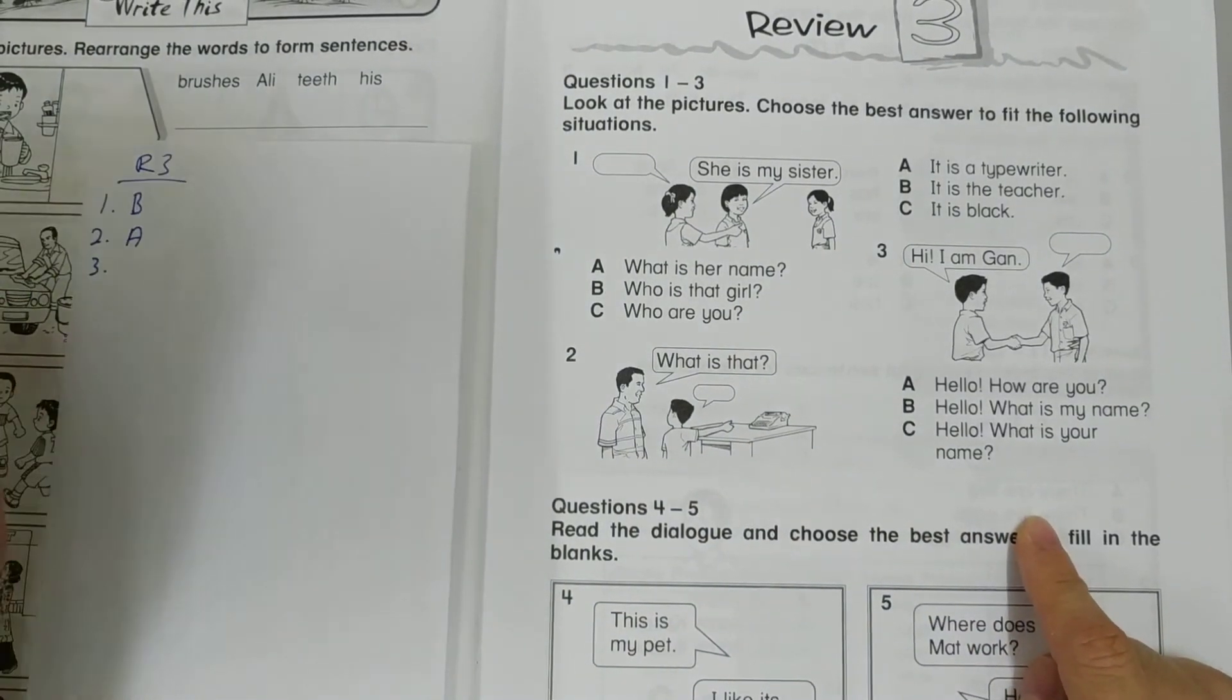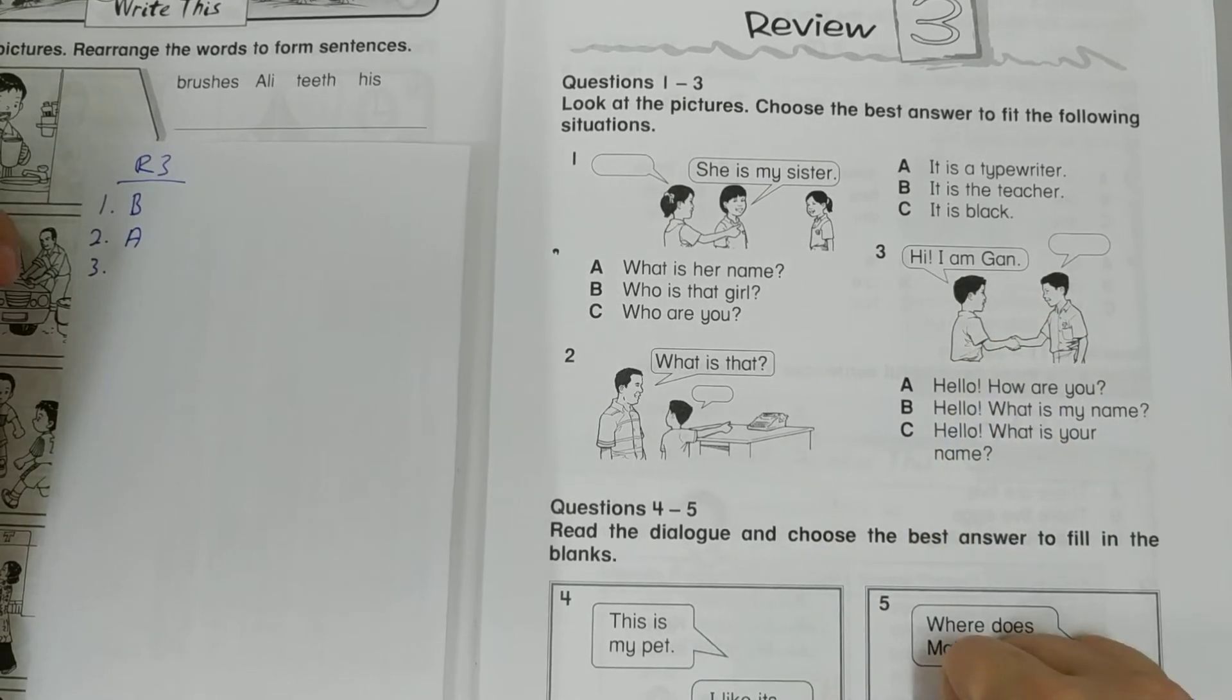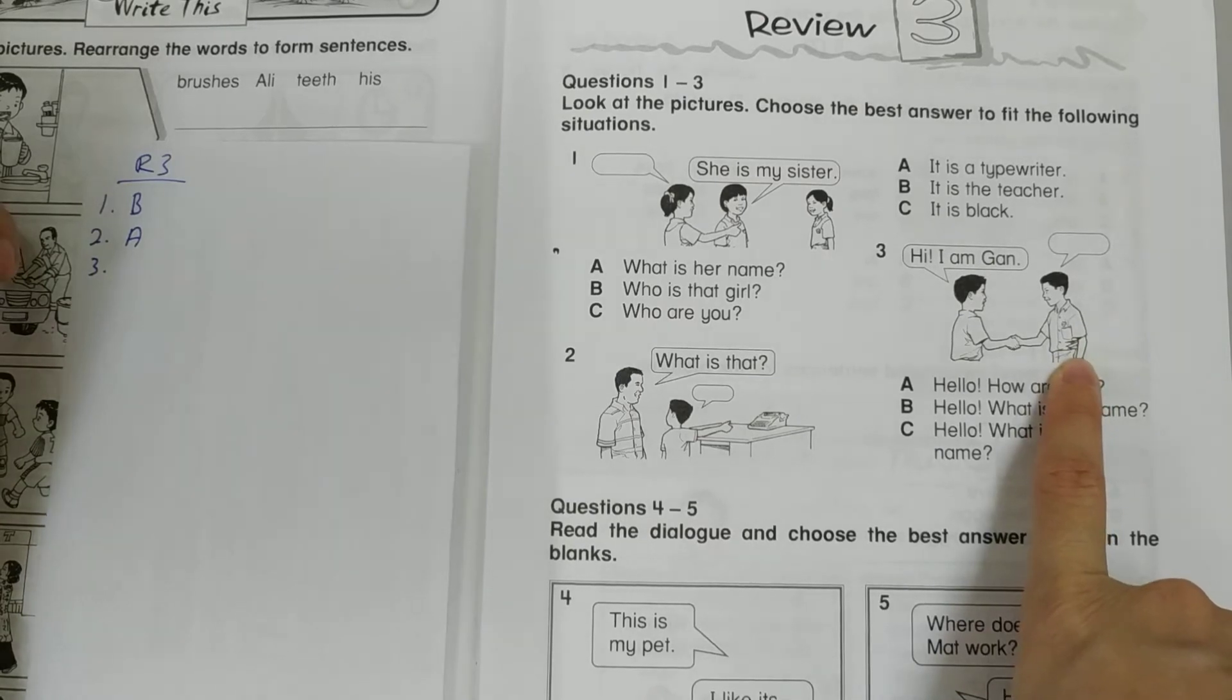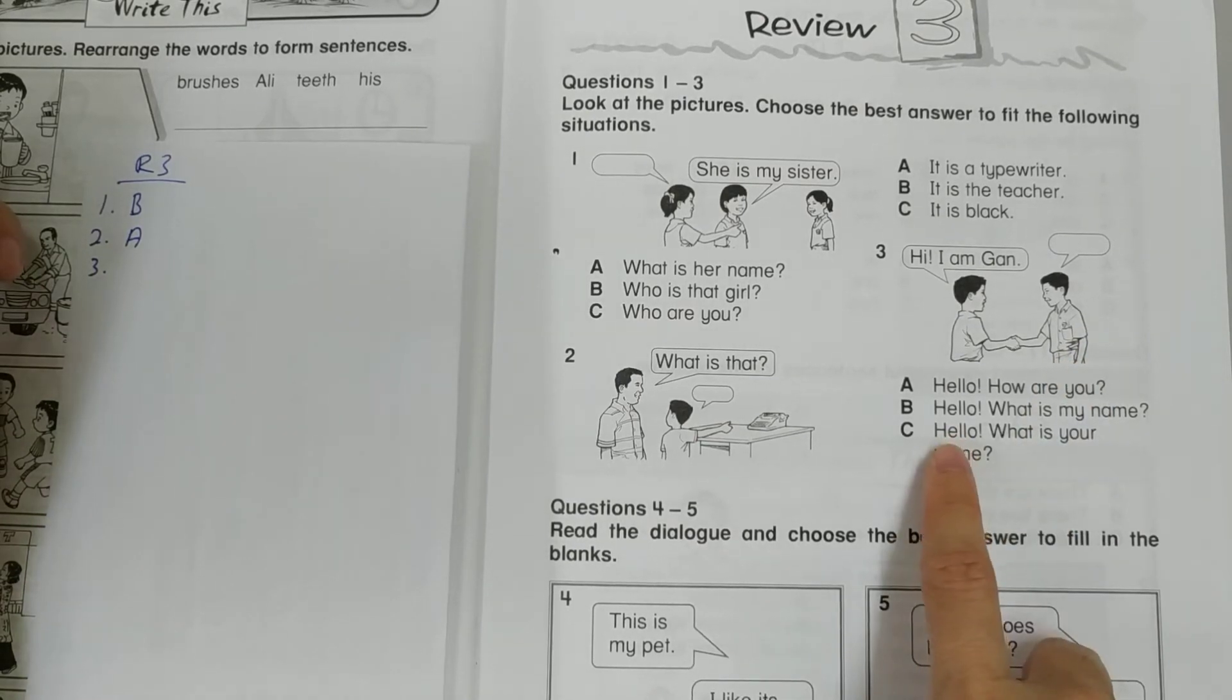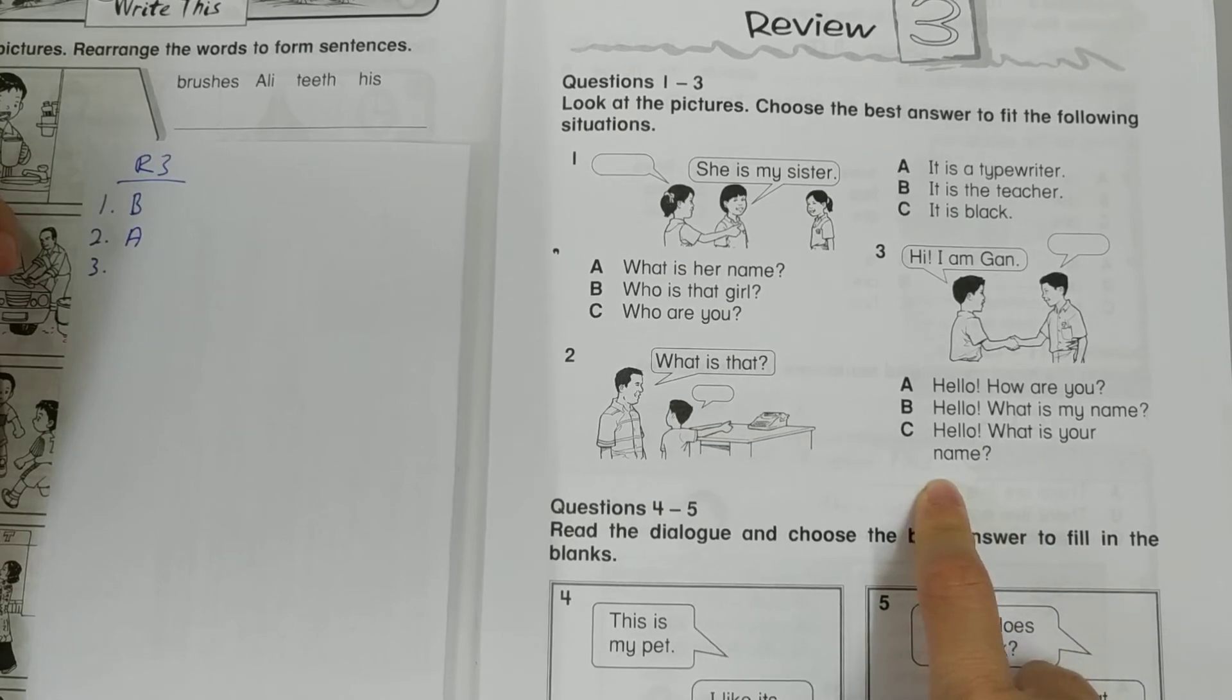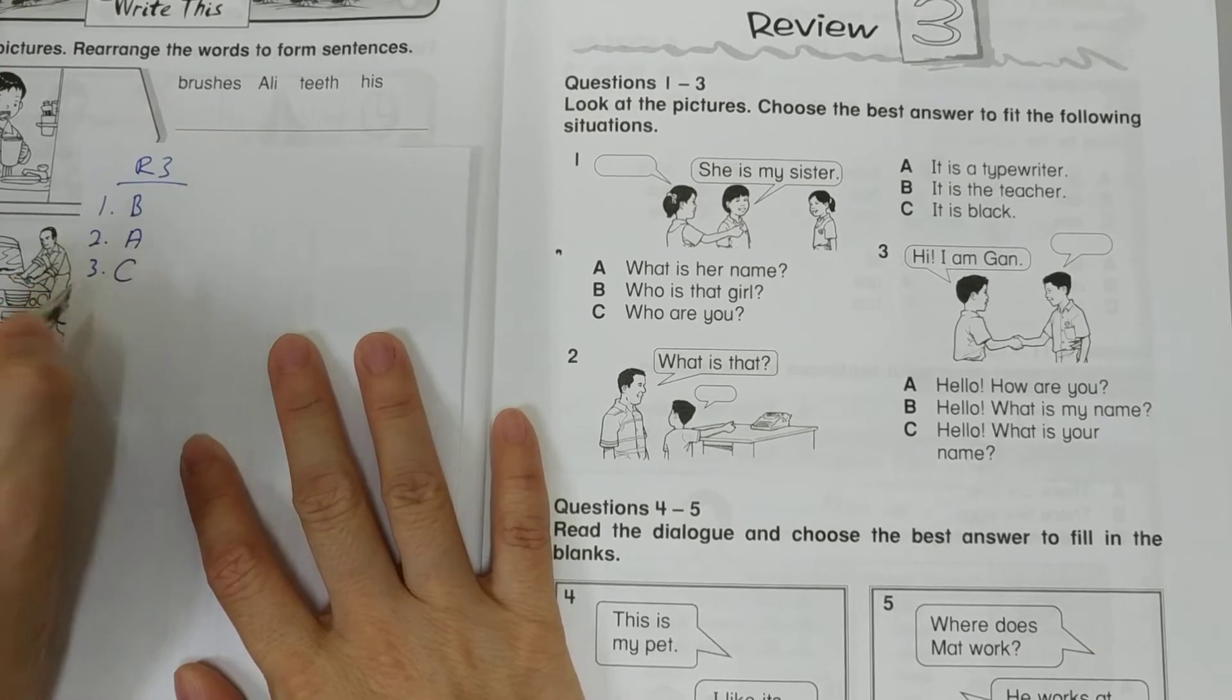Okay, now let's look at number 3. Hi, I am Gun. So what did he ask in the first place? It should be, hello, what is your name? And then only he replies, I am Gun. So 3 is C.